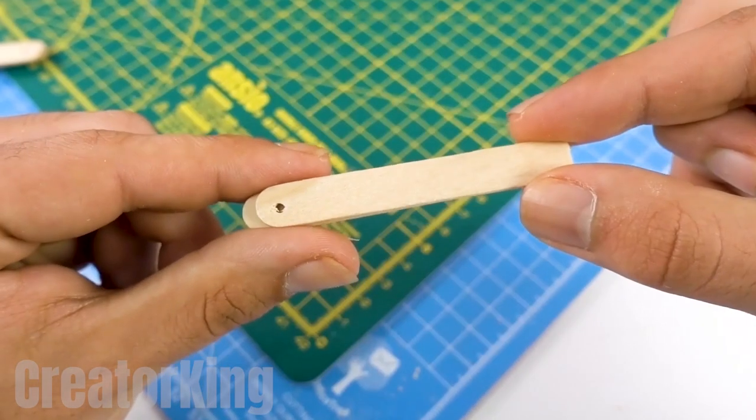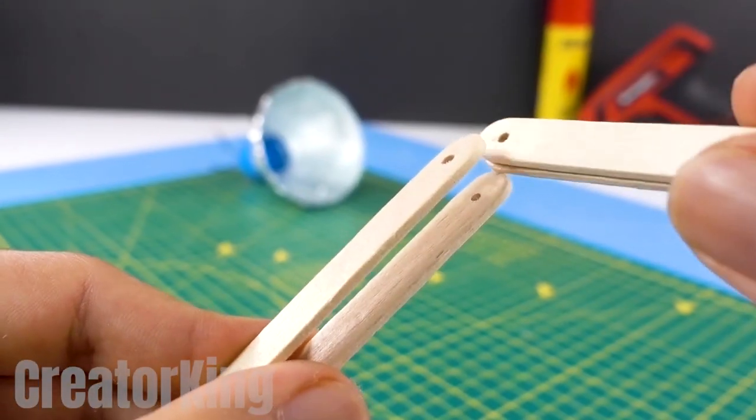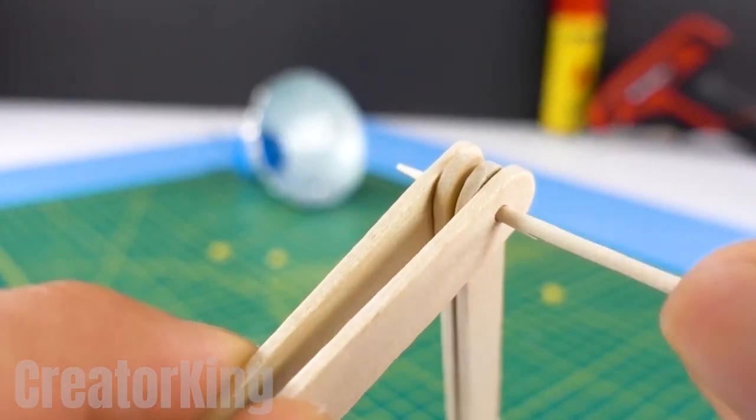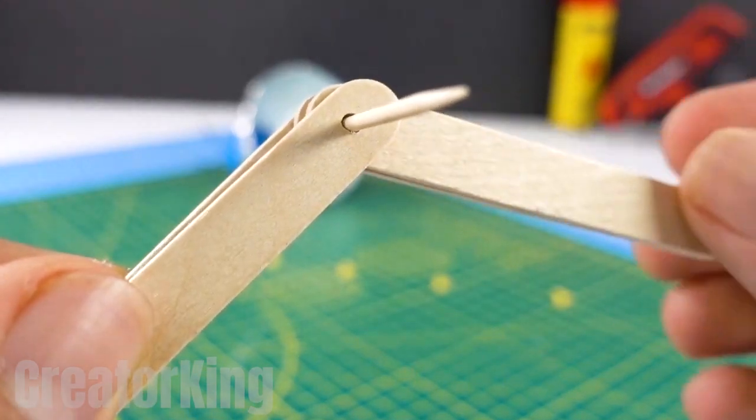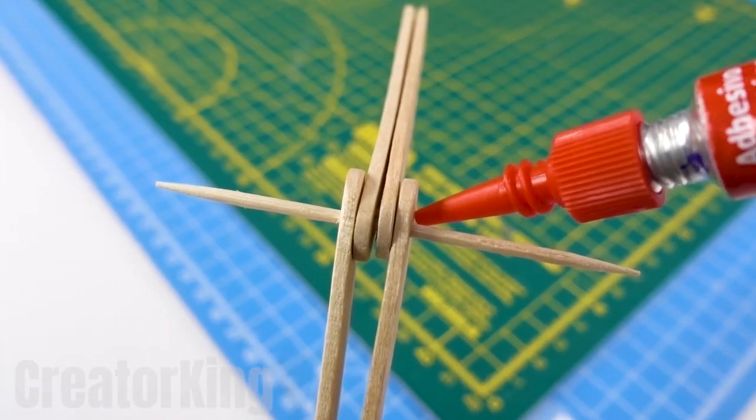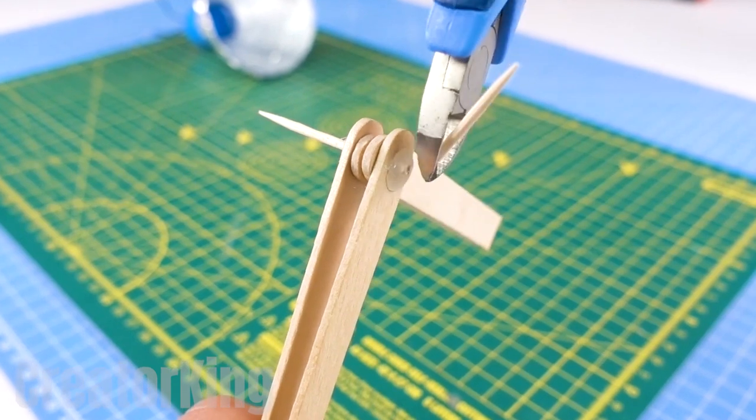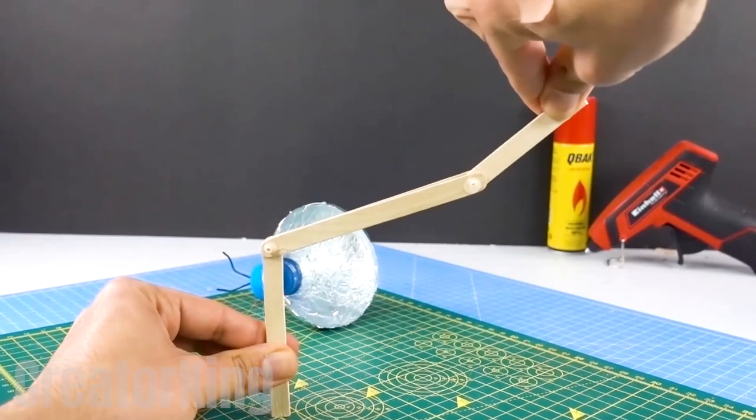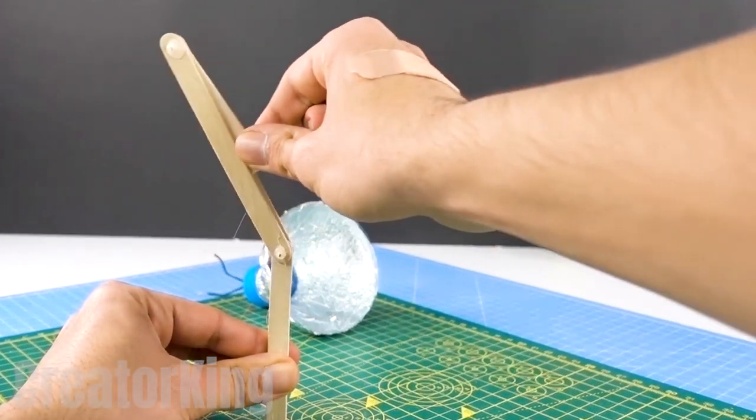Reapply glue and glue two popsicle sticks with holes one on top of the other. Insert another toothpick to hold the new part of the arm for our Pixar lamp. Secure the joint with instant glue and cut off the excess. How does it look? No mechanical arm beats this beauty.